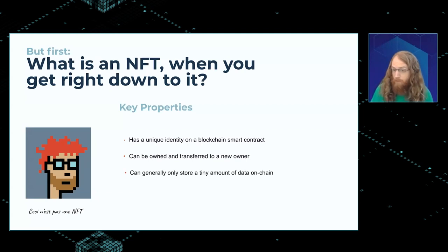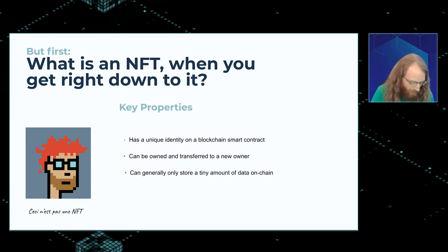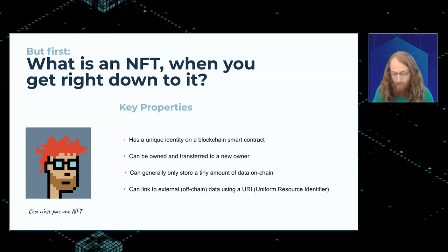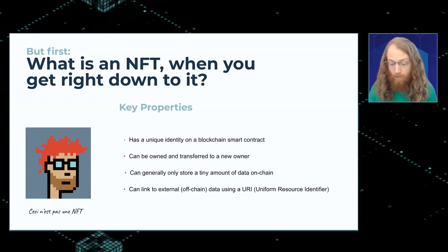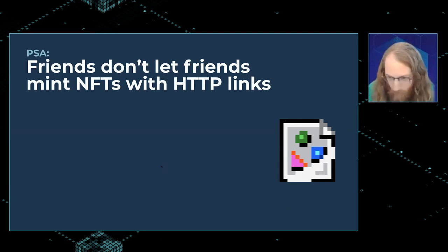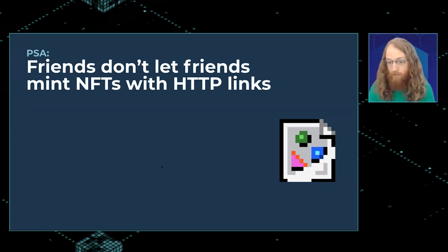NFTs can be transferred to a new owner and are owned by a specific account on the blockchain. They can generally only store a tiny amount of data directly on the blockchain. So they have this escape hatch, which is that you can link to data off-chain using a URI — a uniform resource identifier. This is the primary method of actually getting the NFT to mean something. On the blockchain itself, all you really have is the URI that points you to the thing.